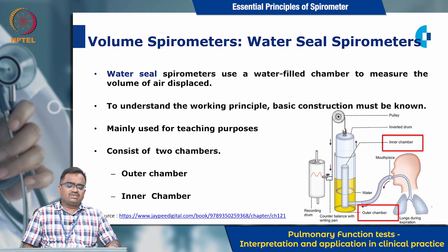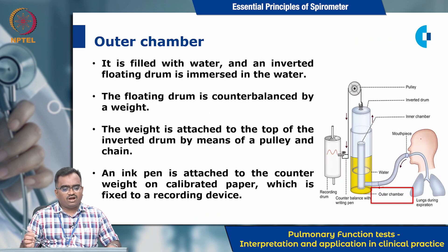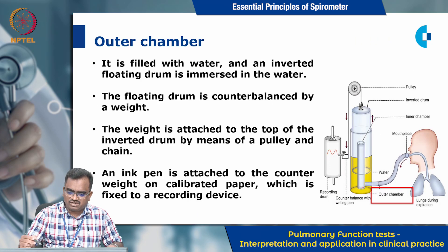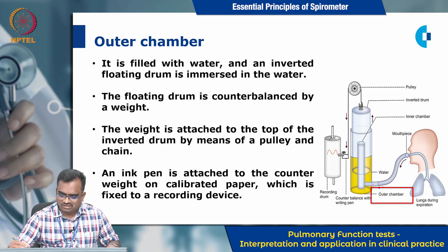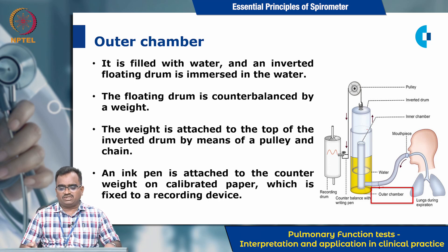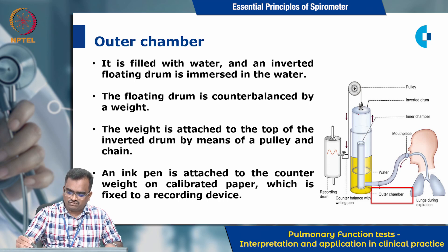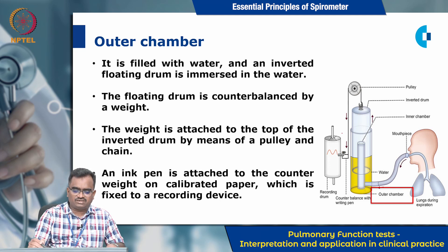The water seal spirometer consists of two chambers: the outer chamber and the inner chamber. The outer chamber is filled with water, and an inverted floating drum is immersed in the water. The floating drum is counterbalanced by a weight, which is attached to the top of the inverted drum by means of a pulley and chain.